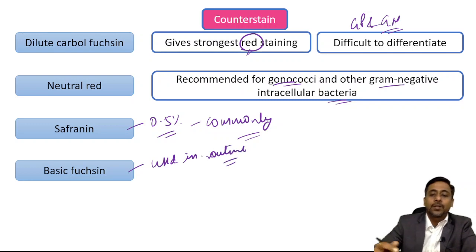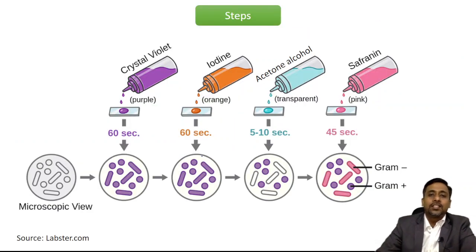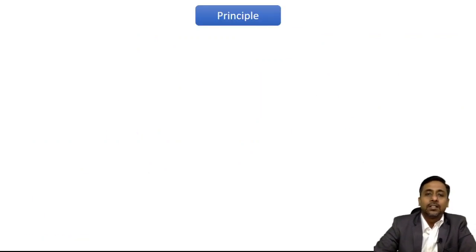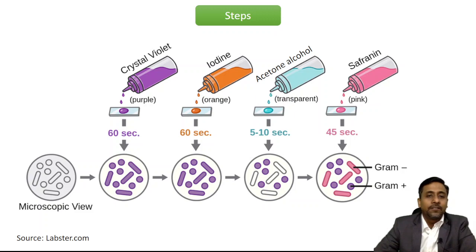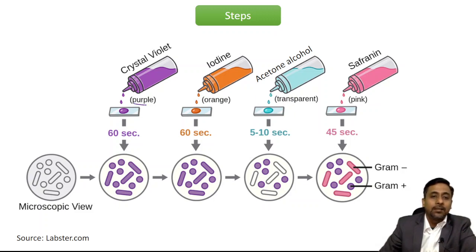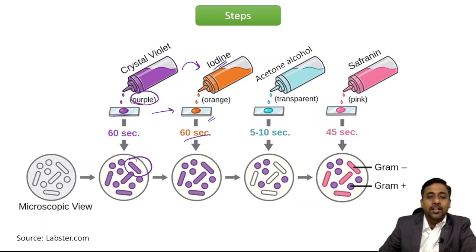Looking at the image showing the steps of gram staining: the first reagent applied is crystal violet, applied for 60 seconds, which imparts a purple color to the bacteria. After washing off the crystal violet, the mordant — iodine — is added and kept on the slide for 60 more seconds. The bacteria still remain purple at this stage.